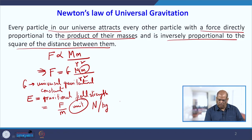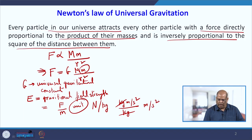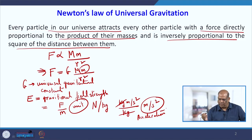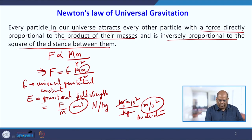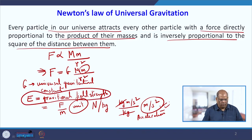Newton is nothing but kg·m/s², and dividing by kg, the kg cancels and you get m/s². So if you note carefully, this is just the unit for acceleration — in this case, acceleration due to gravity. So basically, gravitational field strength has the unit of acceleration due to gravity.